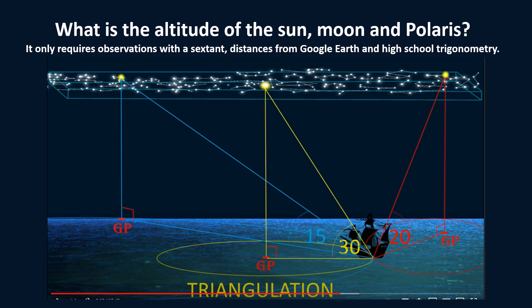So the next time a flat earther tells you that sextants only work on a flat earth, ask them what is the altitude of the sun, the moon, or Polaris. I mean, it only requires observations with a sextant, distances from Google Earth, and high school trigonometry. But don't hold your breath waiting for an answer.